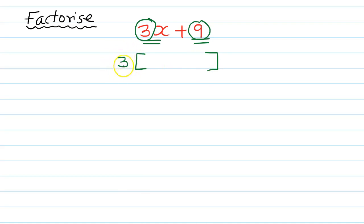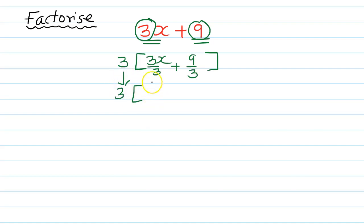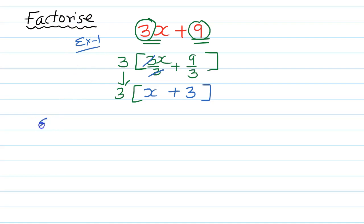Once you take 3 outside, write the bracket. Divide each term by 3: 3x divided by 3 gives x, and 9 divided by 3 gives 3. The 3s cancel, so the answer is 3(x plus 3). That's example 1.